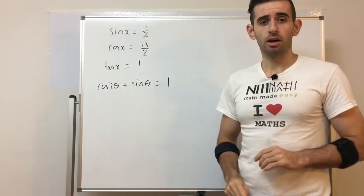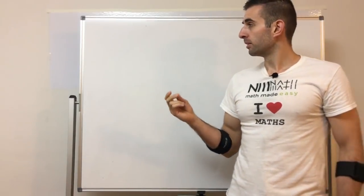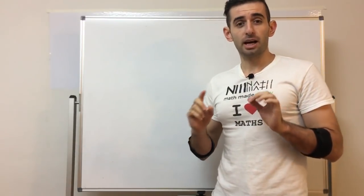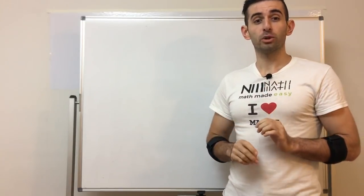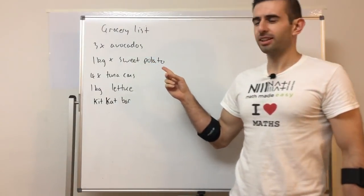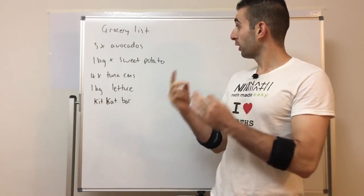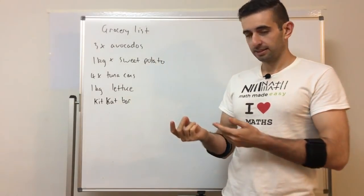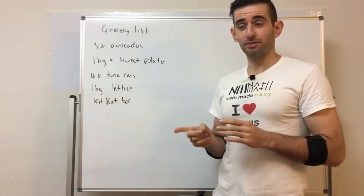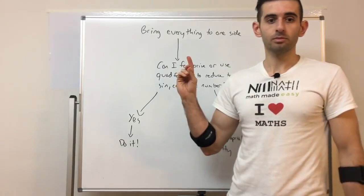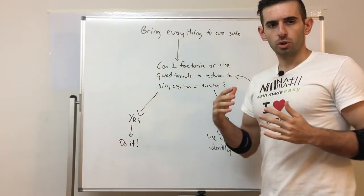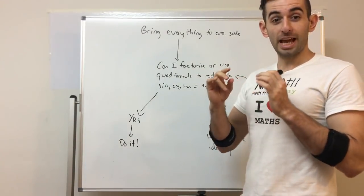All right, let's spin the whiteboard. So first I'm going to help you by looking at this flowchart — that's the flowchart, not a grocery list. So when we're solving trig equations, the aim is to reduce it down to sine, cos, or tan equals a number.